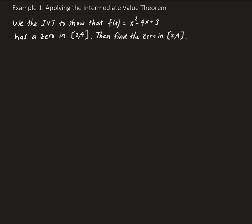In order to use the Intermediate Value Theorem, we need to make sure that our function is continuous. In this case it is — our function is continuous. The reason it's continuous is because it's a polynomial. Whenever we're working with a theorem, we always need to state our assumption: f(x) is continuous since it's a polynomial, and we know polynomials are continuous everywhere.